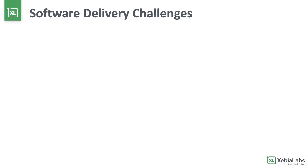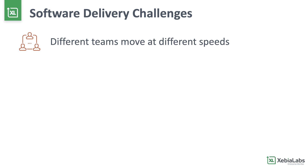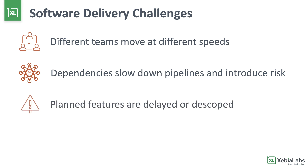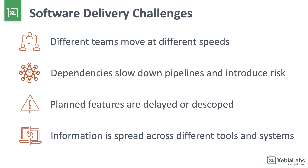Are you a portfolio or business line manager who struggles to manage complex, cross-application release processes? You probably work with development teams that move at different speeds through iterative cycles of building, testing, and deploying software. You probably have to manage dependencies between applications that can slow down pipelines and introduce risk. You might even have issues with planned features being delayed or de-scoped without business stakeholders knowing about it beforehand, and the information you need to keep track of it all is spread across different tools and systems.